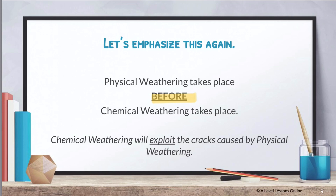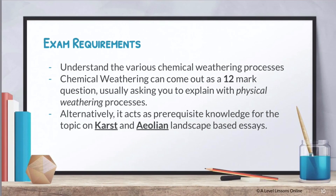Exam requirements are basically the same as for physical weathering — understand the various chemical weathering processes. It usually comes out as a 12-mark essay question, or it's prerequisite knowledge to karst and aeolian landscape-based essays. That's all for chemical weathering — just understand these main five types, they are part of your syllabus. In the next few videos, I'll mostly move on to cover karst and aeolian landscapes.